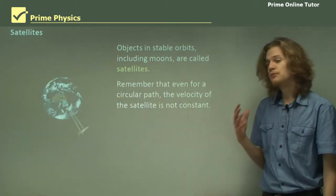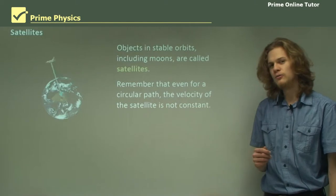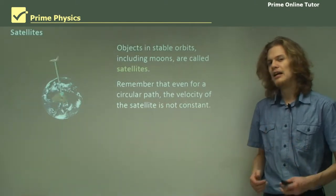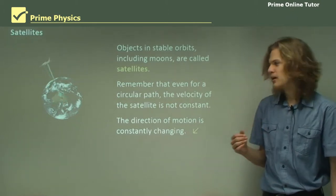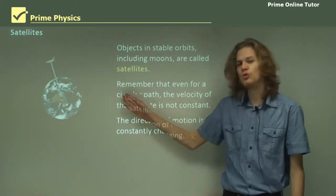Remember that even for a circular path the velocity of the satellite will not be constant. It will always be changing. The direction of motion is constantly changing and in fact the direction of the acceleration is always changing.